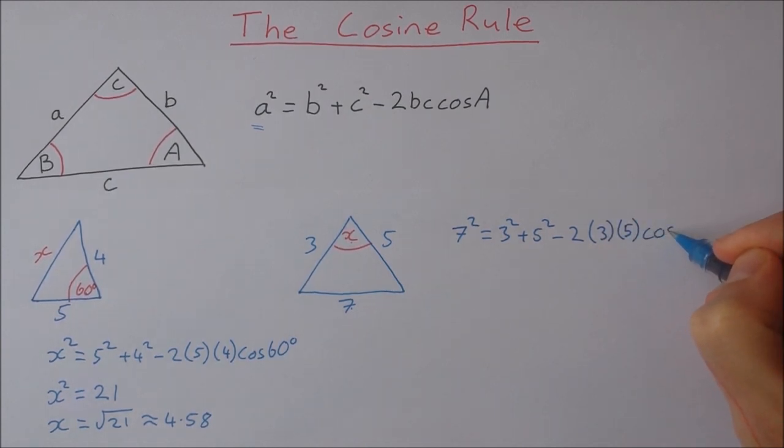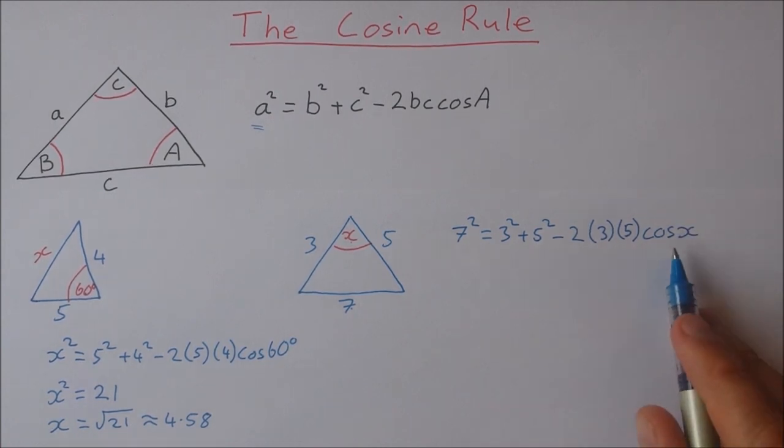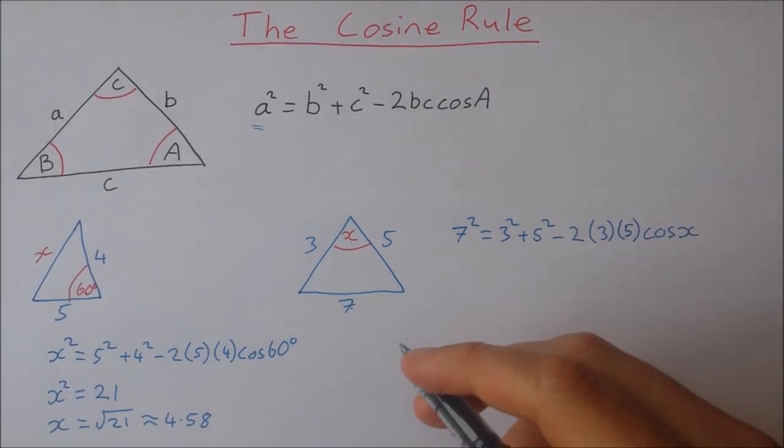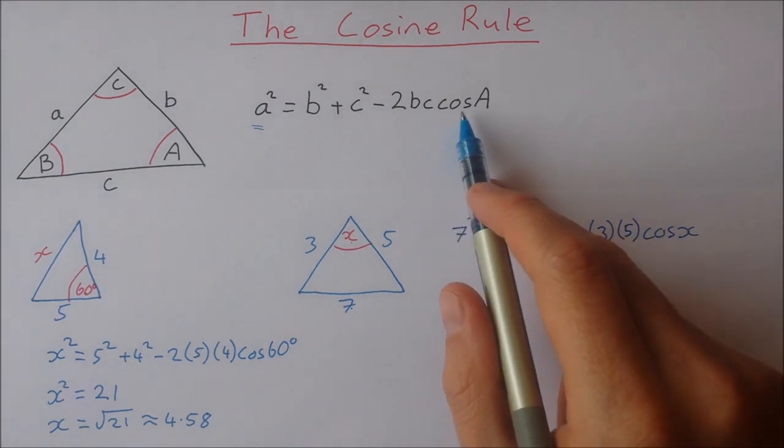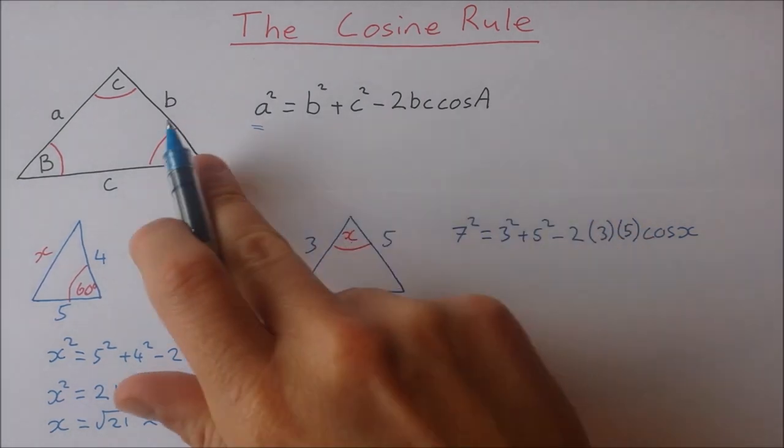Small times the cosine of x. And we're going to solve for x. Sometimes you might see the cosine formula in a different form where you have cosine of A taken out front.